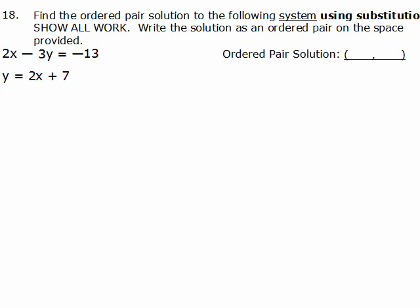Alright, so here we're going to solve a system of equations by using substitution. So since it says use substitution, it means we want to see if something we could easily solve for one of the variables and here it is. It's already solved for Y. Y is 2X plus 7. So we're going to take the other equation, 2X minus 3Y equals negative 13 and we're going to substitute in place of that Y, the 2X plus 7.